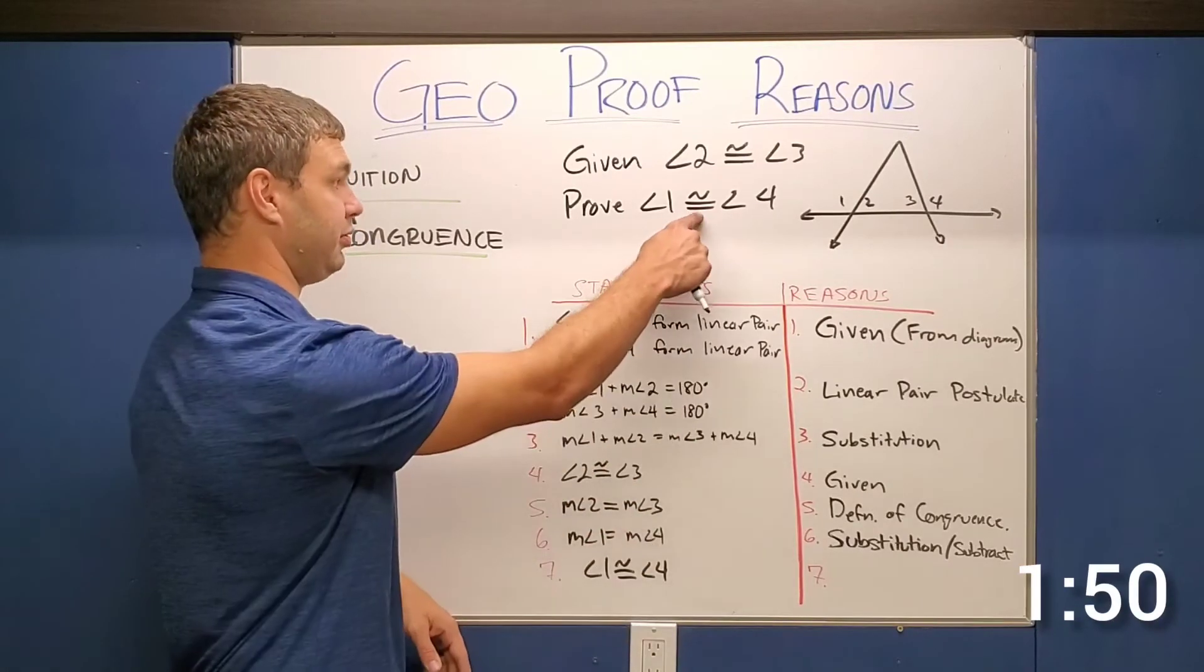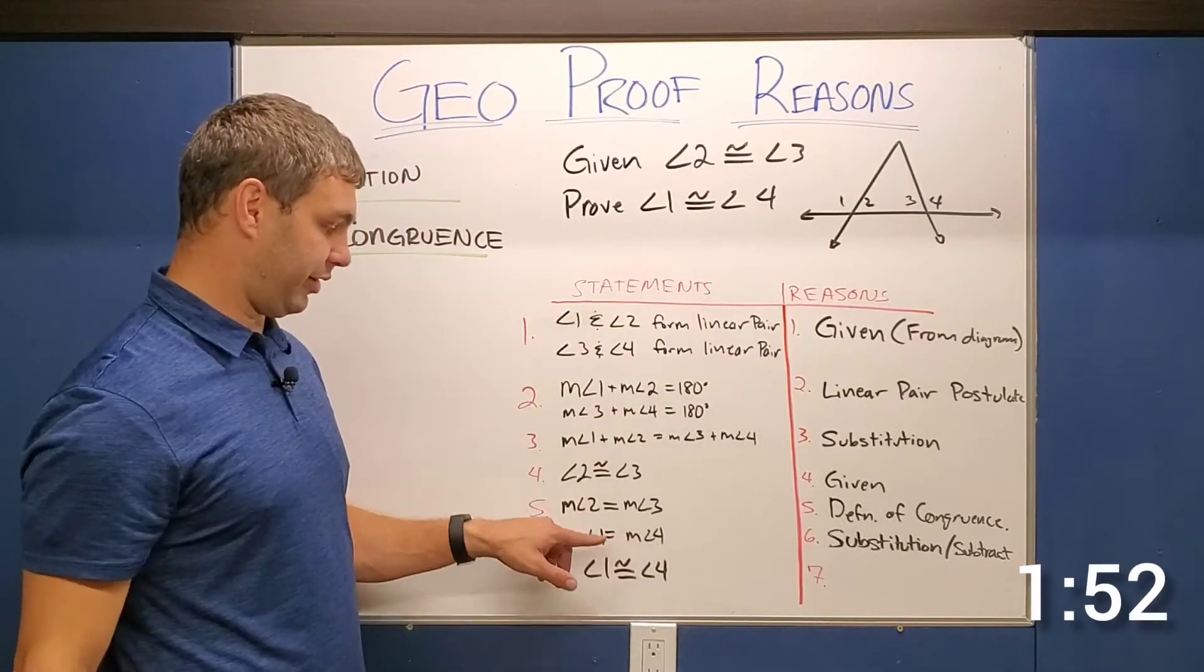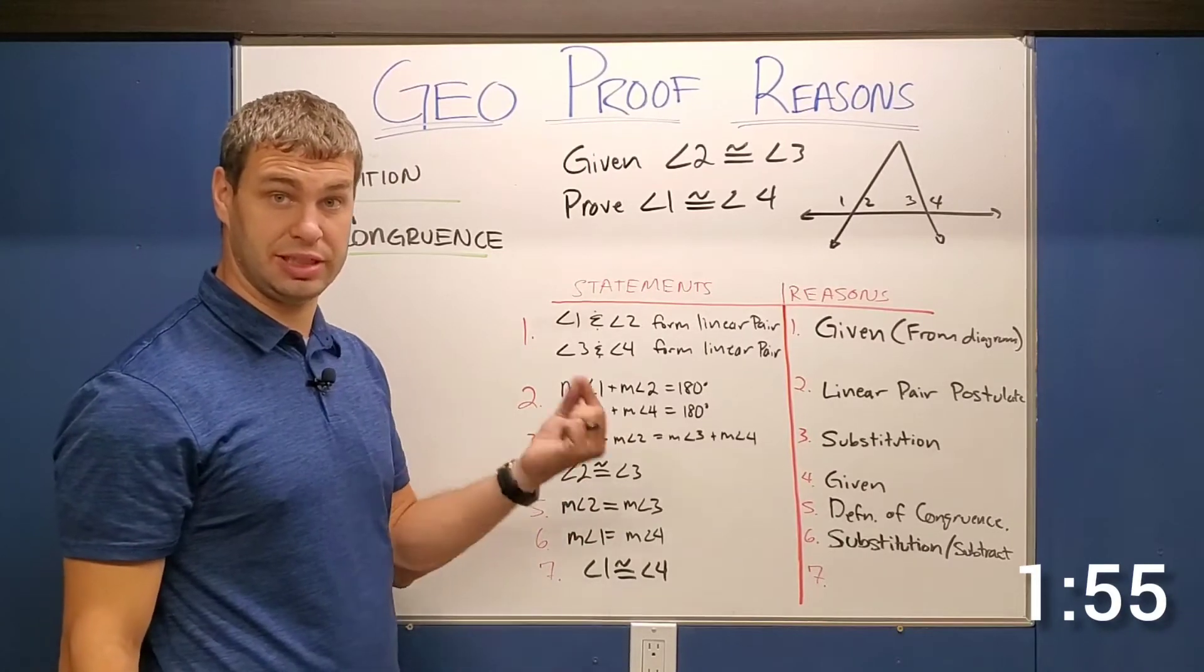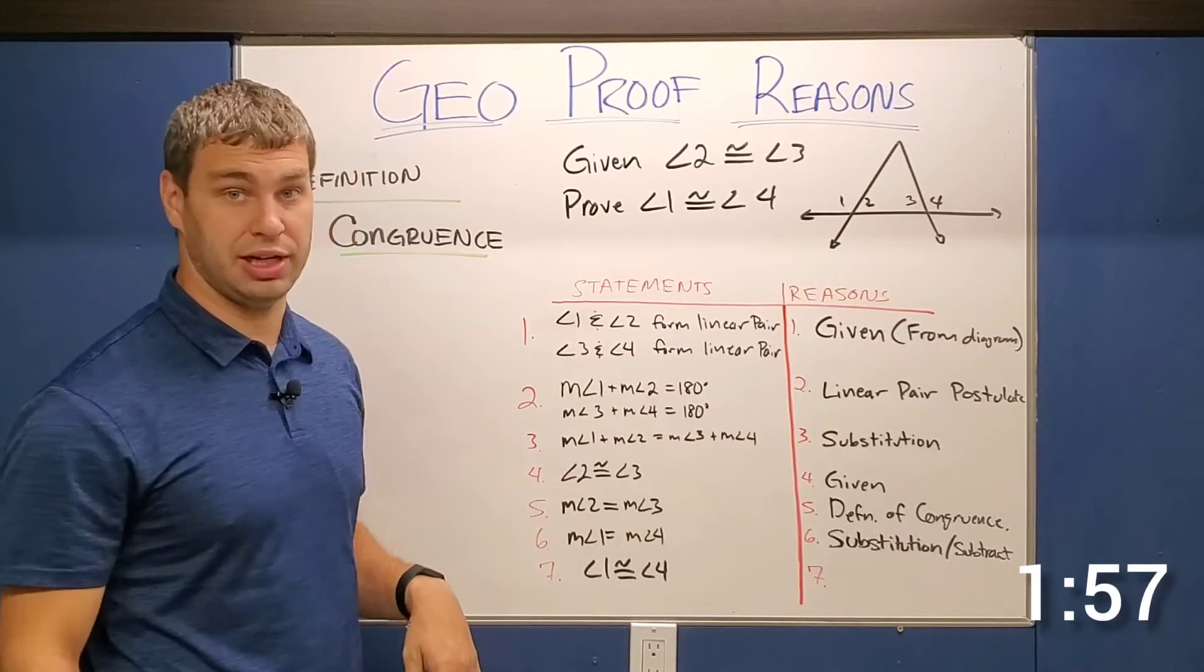But now I need to go backwards. Remember, I'm trying to prove congruence, not equals. So if I go forwards or backwards from equals to congruence or congruence to equals, either way, definition of congruence.